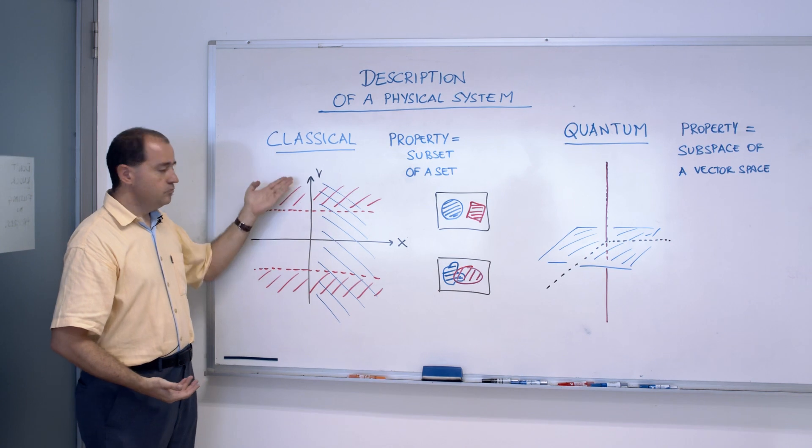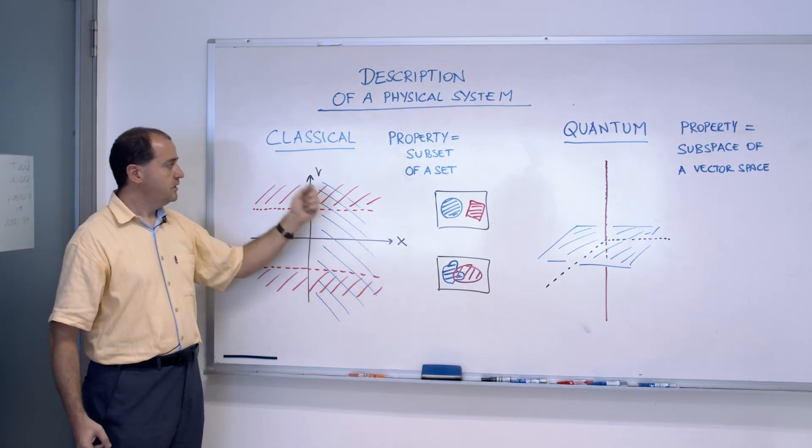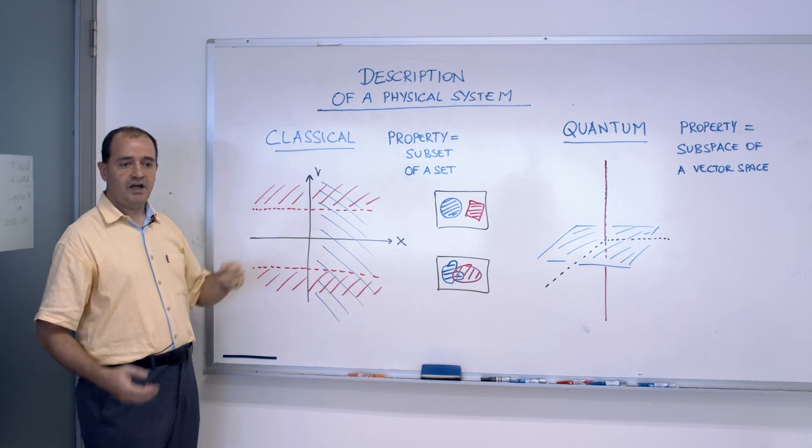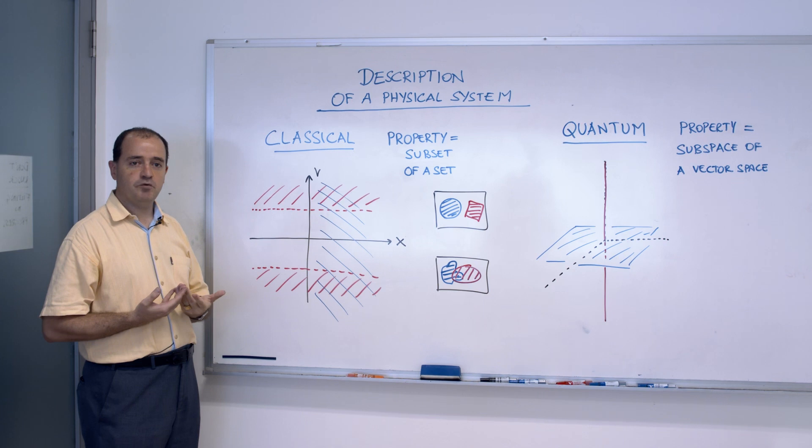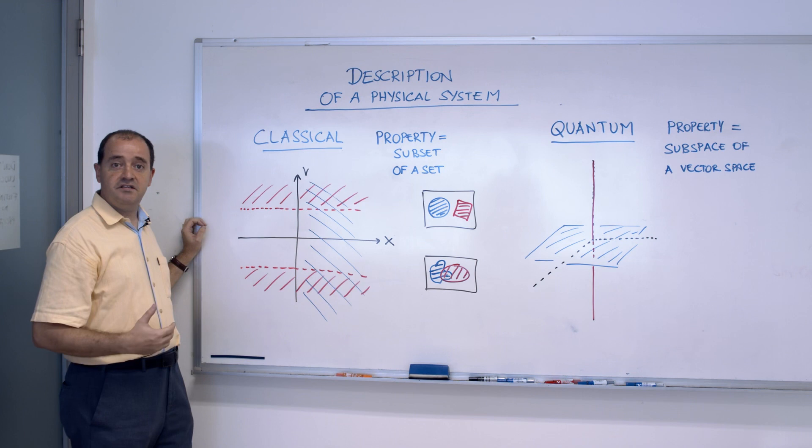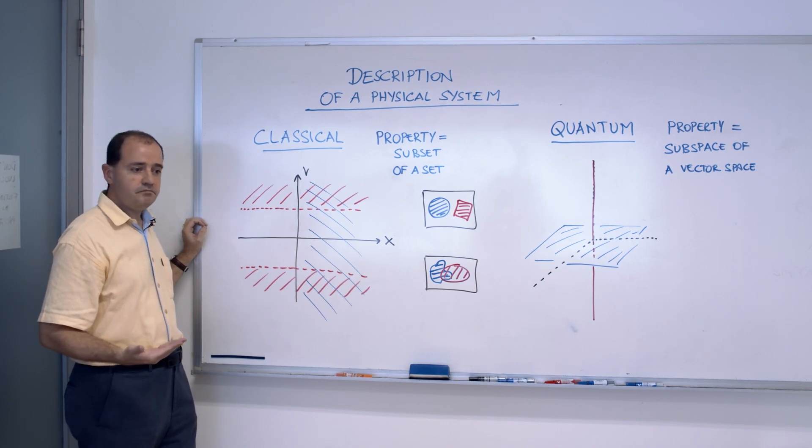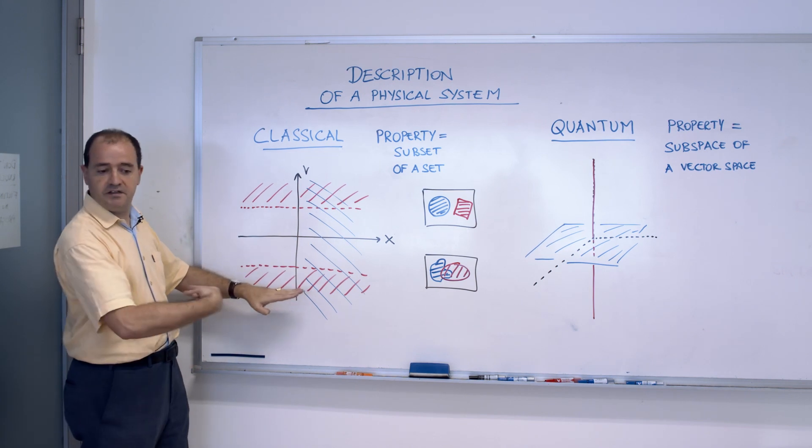So the variables of the car are its position and its speed. And now every physical property of this car can be described in terms of these variables. For instance, the red set describes the cars that are exceeding the speed limits, because the speed is above this limit or below in the other direction.